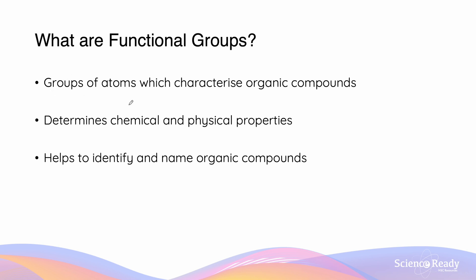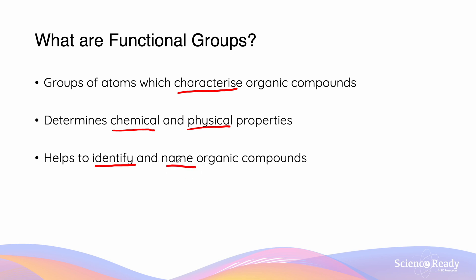A functional group is a group of atoms which characterises organic compounds. They usually determine the chemical and physical properties of the organic compound which they constitute, and by doing so it helps us to identify and name organic compounds.